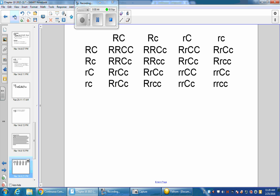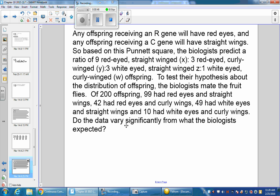Any offspring receiving a capital R gene will have red eyes, and any offspring receiving a C will have straight wings. So based on the Punnett square, biologists predict a ratio of 9 red-eyed straight-winged, 3 red-eyed curly-winged, 3 white-eyed straight-winged, and 1 white-eyed curly-winged offspring.